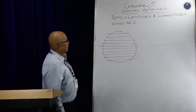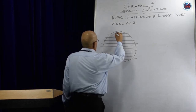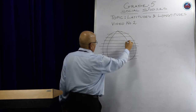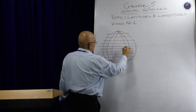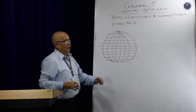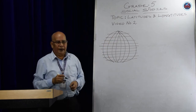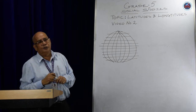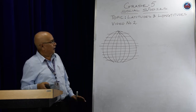Longitudes are vertical lines which go from the north pole to the south pole. When this happens, it forms a grid, and the grid has got many uses, which I will tell you a little bit later.